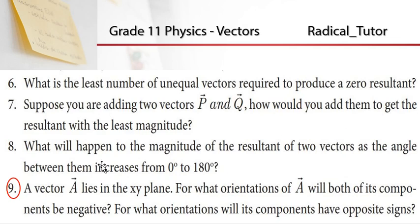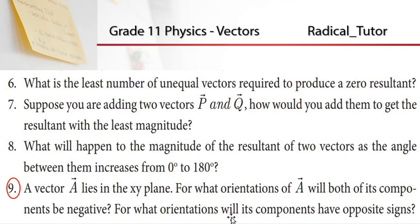For that — a vector A lies in the xy-plane. For what orientations of A will both of its components be negative? Vector A is in the xy-plane. The orientation affects the x and y components. For both components to be negative, the vector must lie in the third quadrant.